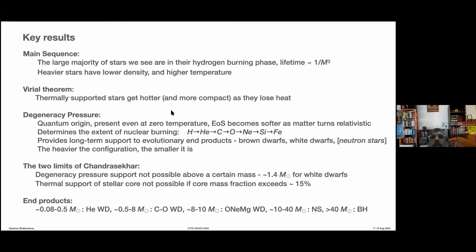Starting from a cooler initial stage, stars can get hot enough to start nuclear fusion. As nuclear fusion proceeds and once it runs out, the core will get even more compact and even hotter, and the subsequent series of nuclear burning can start. We have also found this new source of pressure which comes from degeneracy — it is of quantum origin and is present even at zero temperature.